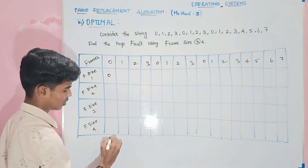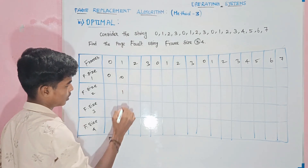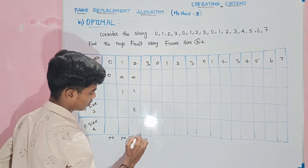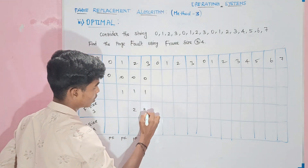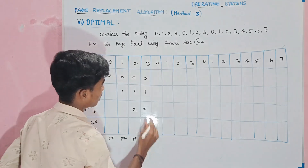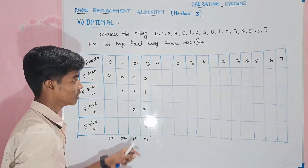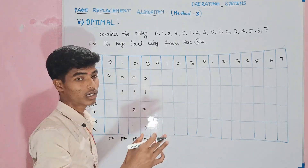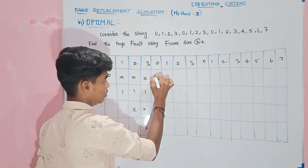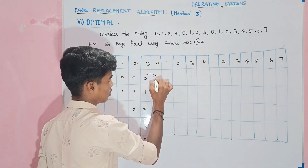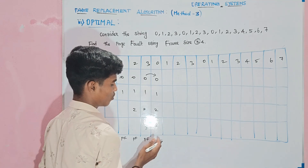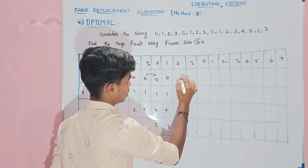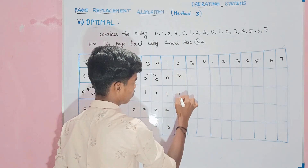Now we can use page frame size 1, 2, 3, up to 4. For 1 frame size we can use page fault. Then 0, 1 — insert — page fault count 0, 1. Values 2, 1, 2, 1 — page fault 0, 1.